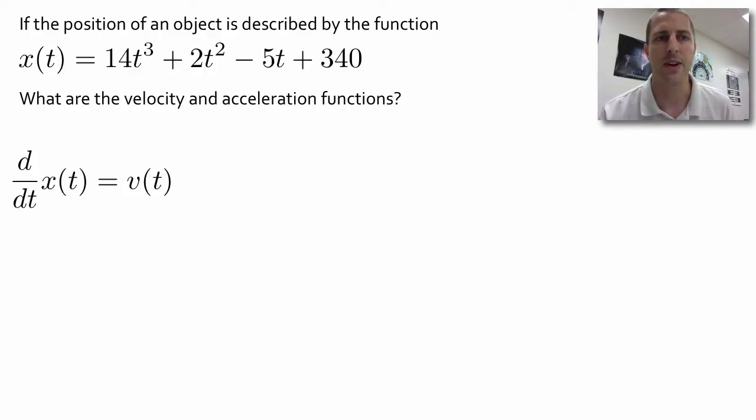Let's try this. Here we have a position function. Position is a function of time. We want to find the velocity function and the acceleration function. To find the velocity function, we take the derivative of position with respect to time. We're going to look at each term in that position function.